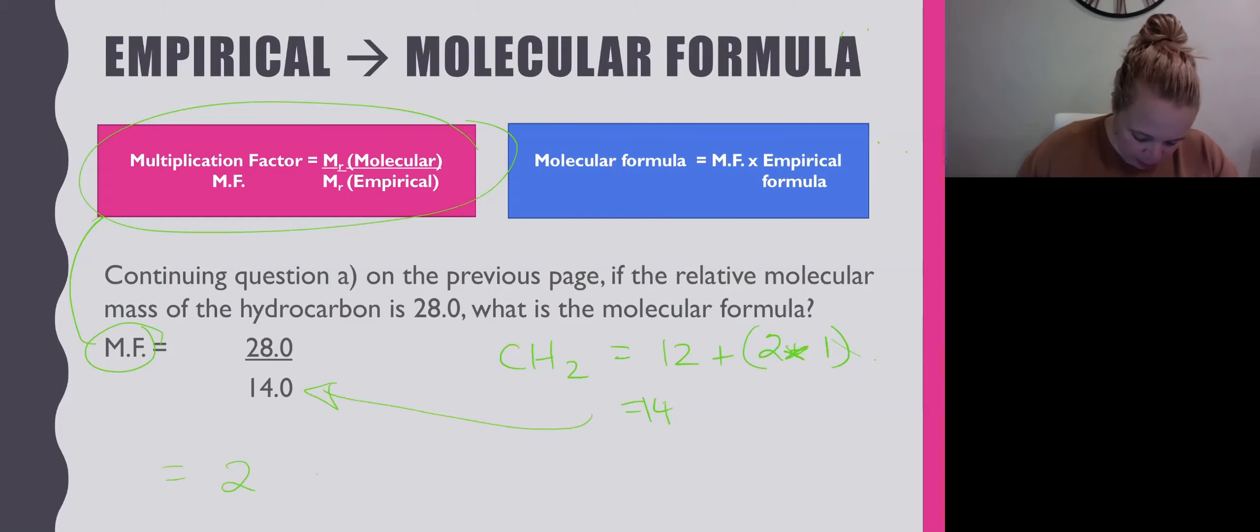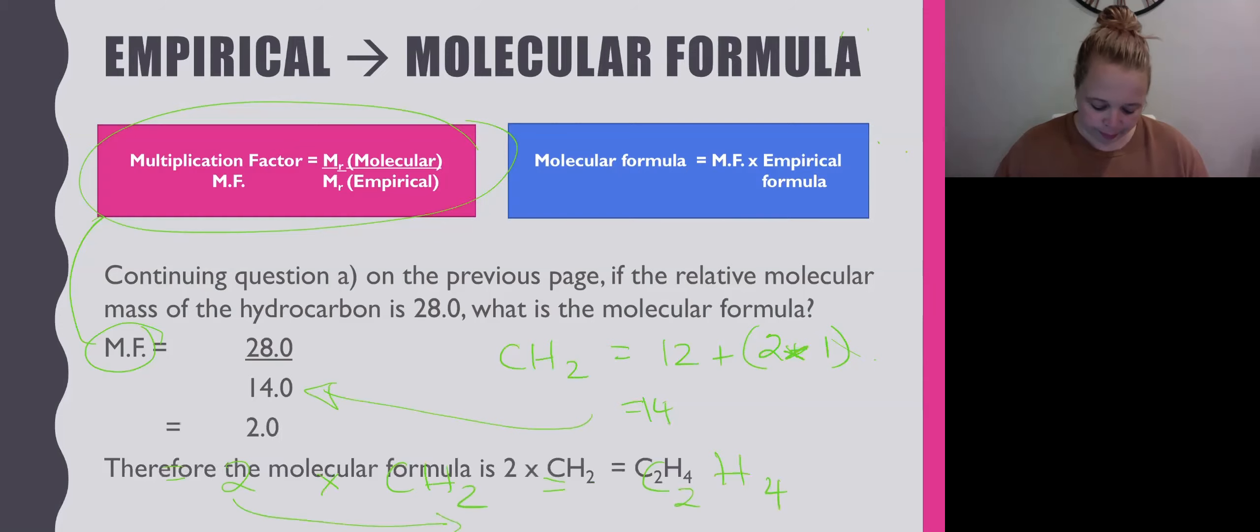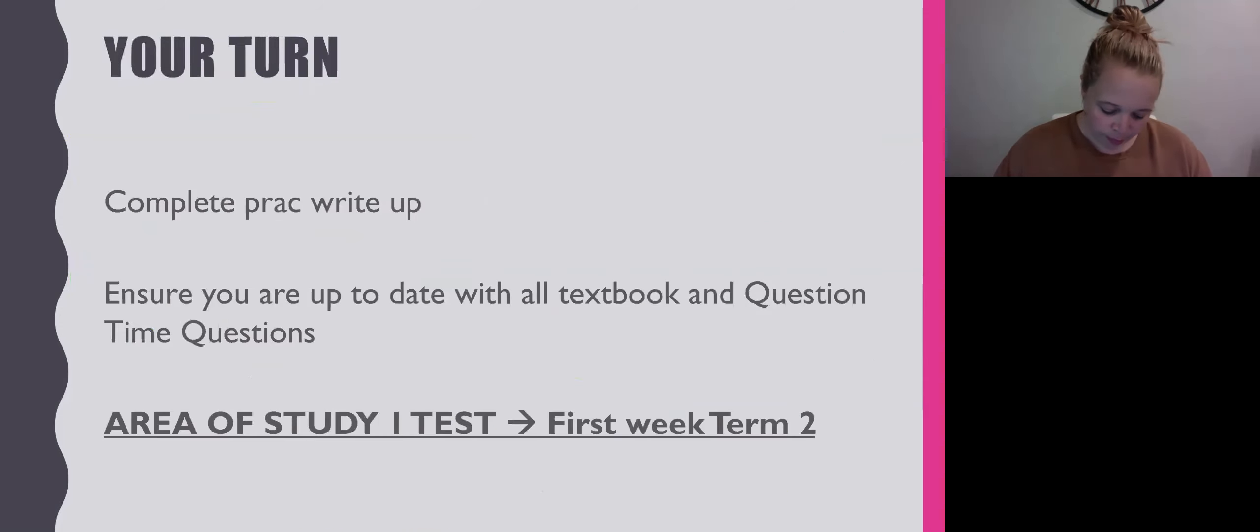When we do that, we're then going to multiply that by our empirical formula, 2 times CH2, which is going to end up with C2H4. And that 4 has come because we've gone 2 times 2 here.